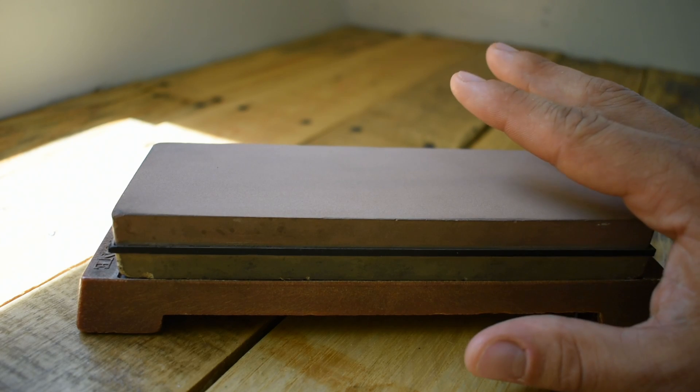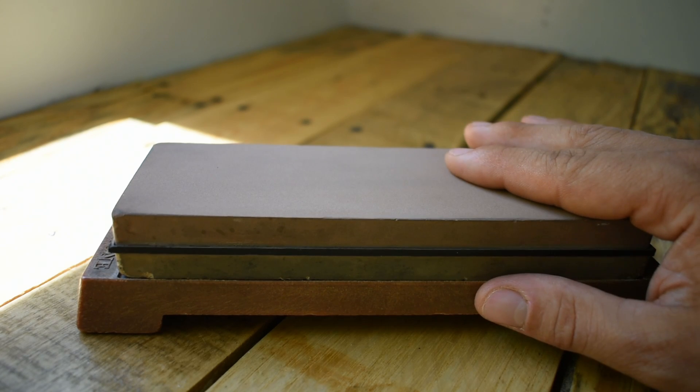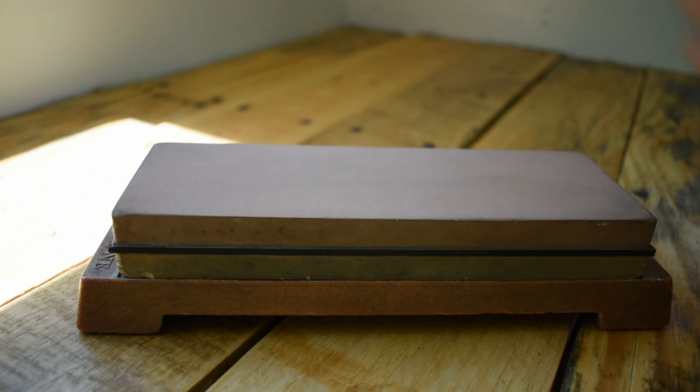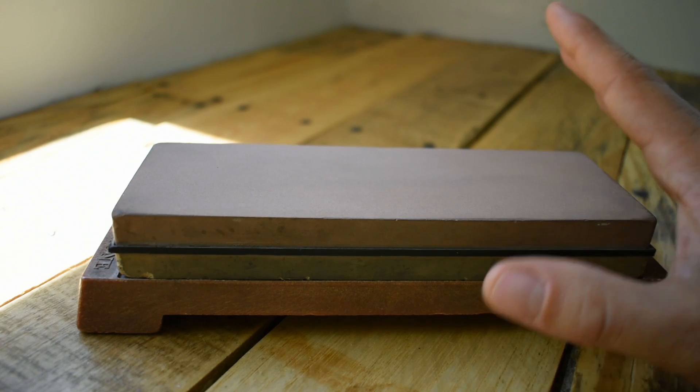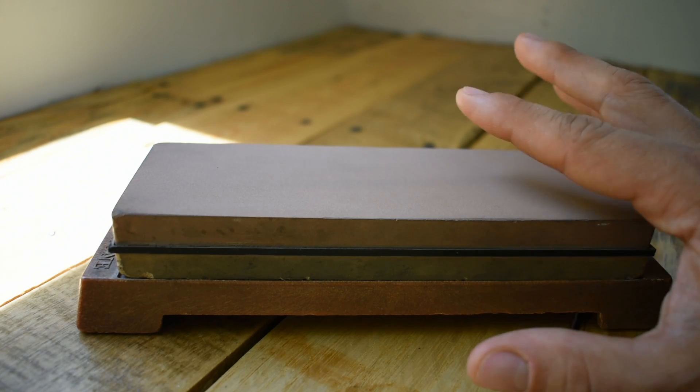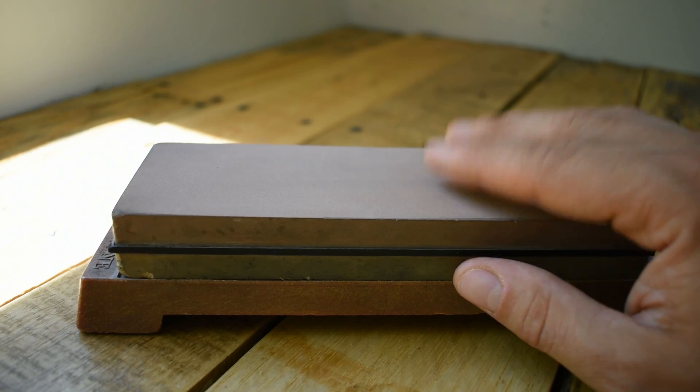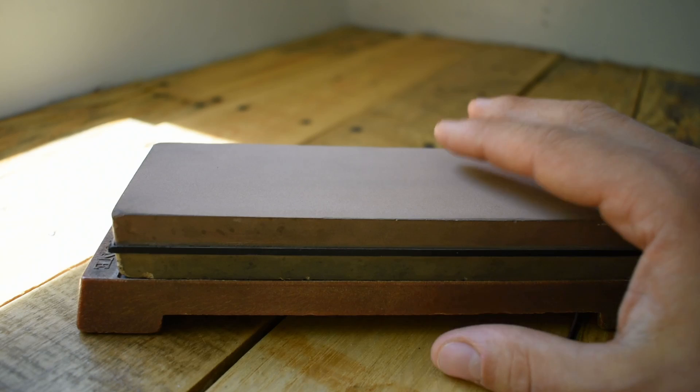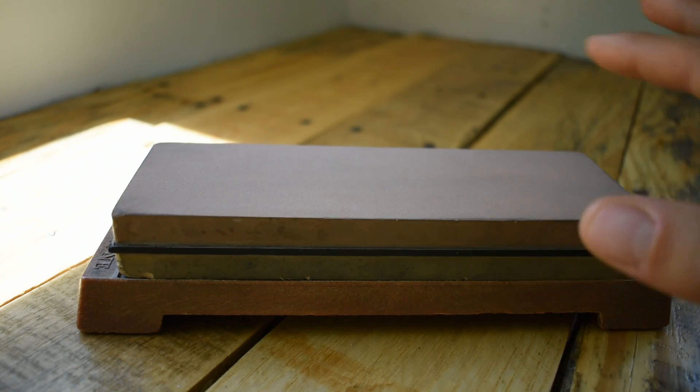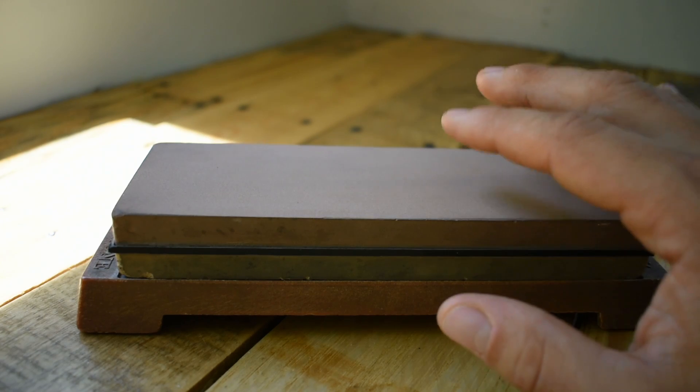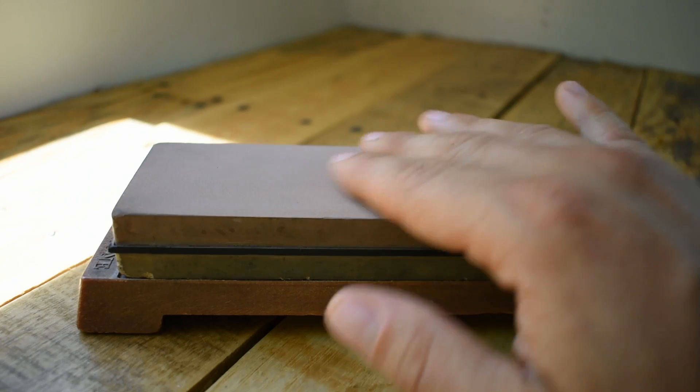Sharpening stones come in a variety of different grits and you'll see that associated with a number. You'll see it as low as 200 or 100 and they go all the way up into the thousands, the tens of thousands. The smaller the number like your 100 and 200 grit, the more coarse the stone's going to be. The more coarse the stone is, the more metal is going to be taken off your knife. The higher the number, the finer the grit on your stone's going to be. And those super high number ones, they polish your knife.